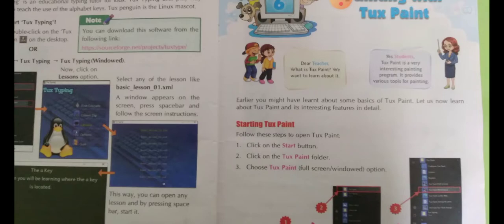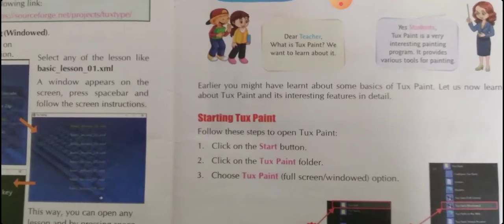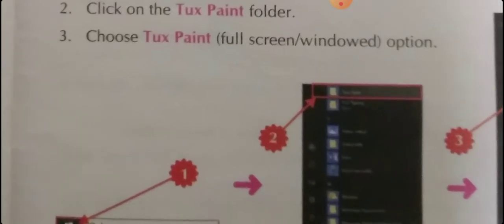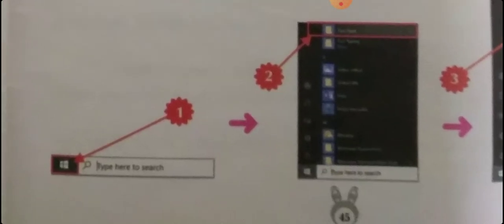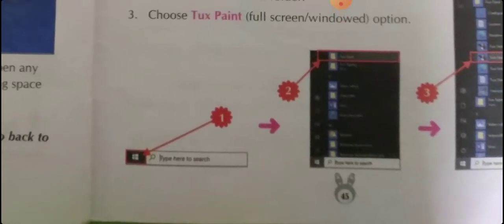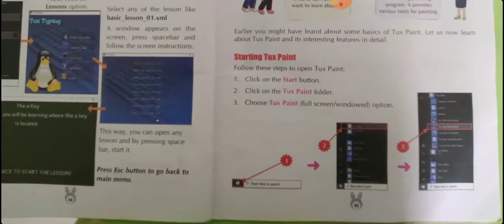By using 2 steps you can start Tuxpaint window. Step 1: click on the Start button — the Start menu appears on your screen. Step 2: click on the Tuxpaint folder. By clicking on the Tuxpaint folder you can open the Tuxpaint window. Simply click on Start button, Start menu appears, click on Tuxpaint folder, and you will get the Tuxpaint window.